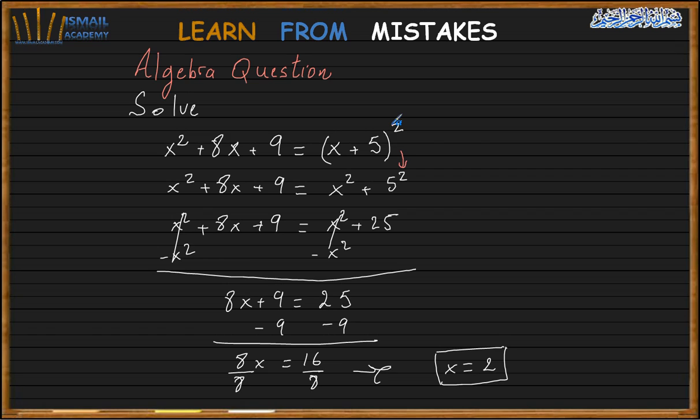We cannot distribute the exponent when we have addition. If I have a times b to the power n, I can distribute, so this would be a to the n times b to the n. Or if I have a over b to the n, I can distribute. But for addition, we cannot do that.